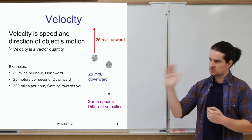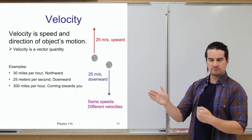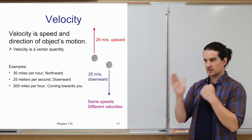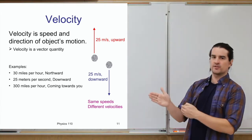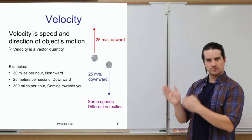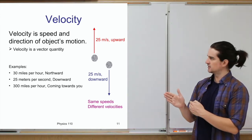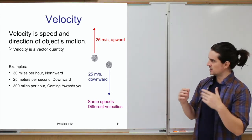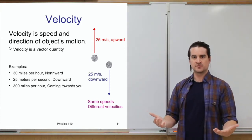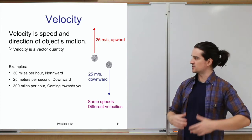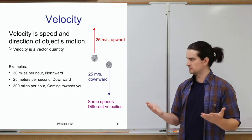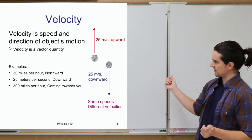If I say I'm driving 60 miles an hour down the highway, I've given you a speed but not a direction. If I say 60 miles per hour north, now I have a speed and a direction — I know the full velocity of that car. Velocity is a vector quantity: it has a magnitude (the speed) and a direction.